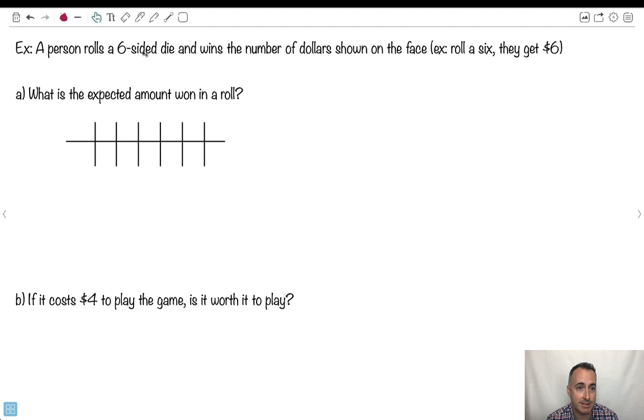So a person rolls a six-sided die, and you win the number of dollars shown on the face. So for example, if you roll a six, you get six dollars. If you get a three, you get three dollars, and so on. What is the expected amount won on a roll? So what I'm going to do, I'm going to show you how to set up this thing with these discrete random variables. So I'm going to say lowercase x, a little x, and we might have different outcomes. We might get a one, or a two, or a three, or a four, or a five, or a six.